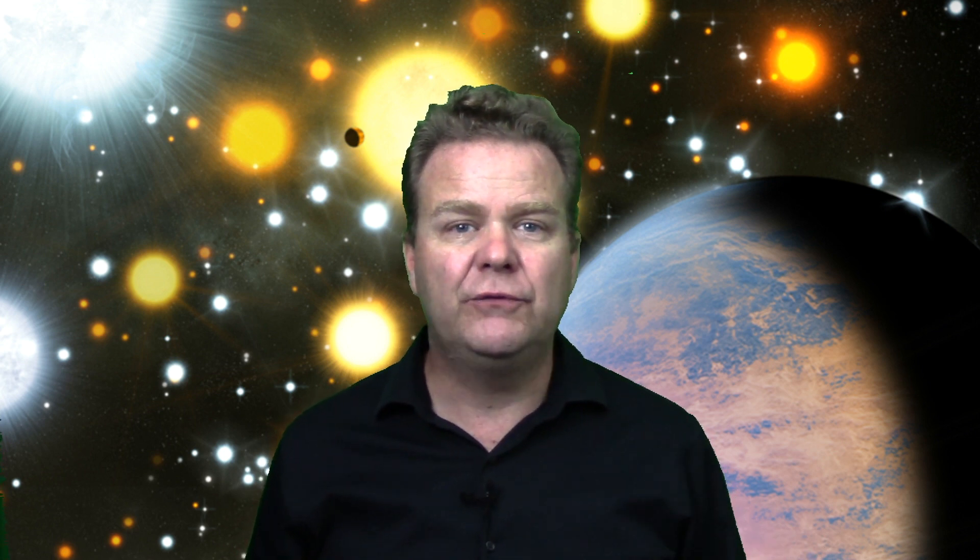One thing I talked about in my last video was the color of the sun. In order to look at that with a camera obscura, I wanted to have a calibration source or a reference source. And so I added in this small white flashlight so that I was able to see the color of the sun compared to something that I know is white. Here's a picture of what that looked like.